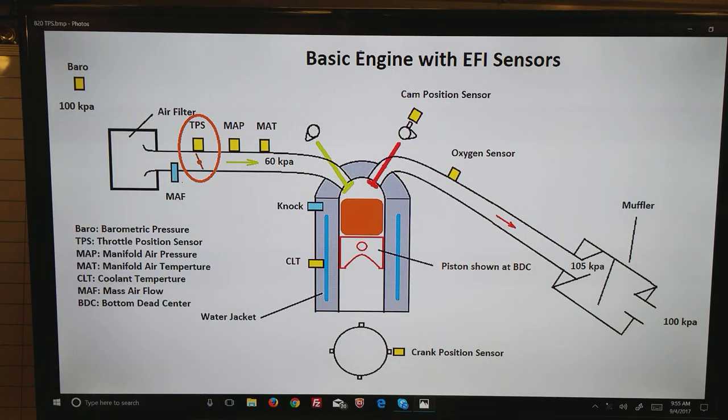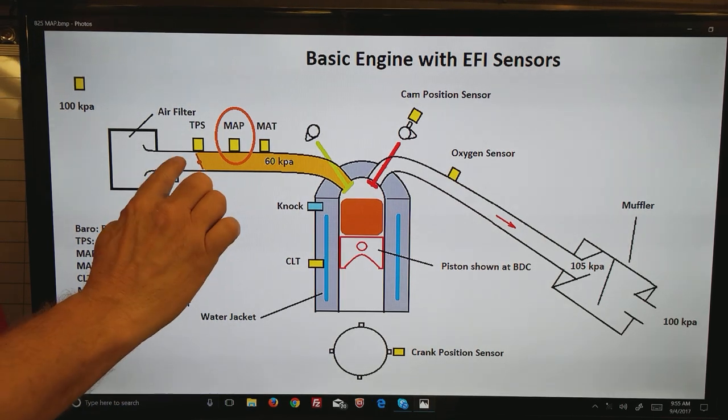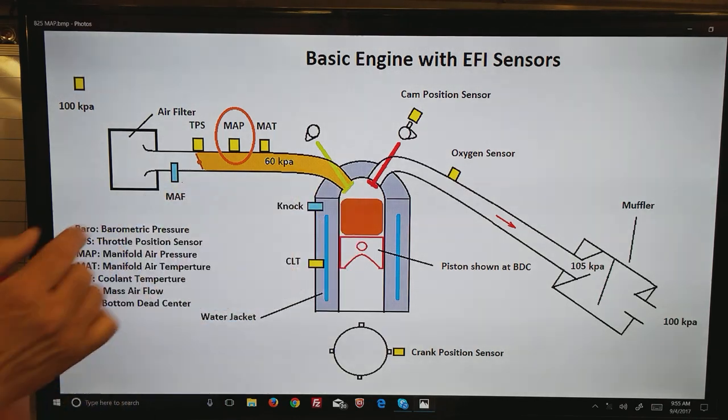The next one is the throttle position sensor, in gold and the gold circle. All that does is measures the angle of the throttle blades at all times. That is what controls the actual pressure in the intake compared to the Baro.